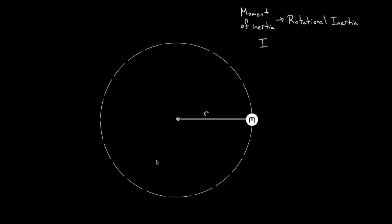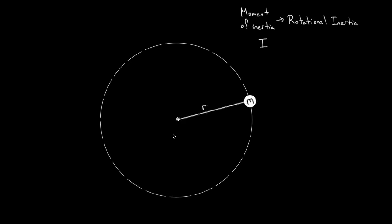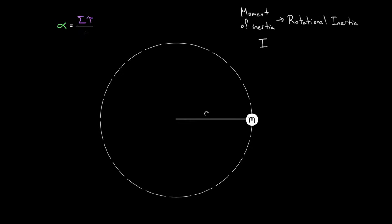So if this system has a large moment of inertia, it's going to be very difficult to get this thing accelerating. But if the moment of inertia is small, it should be relatively easy to get this thing angularly accelerating. The reason you want to know the moment of inertia is because it shows up in the angular version of Newton's second law: angular acceleration equals the net torque divided by the moment of inertia.